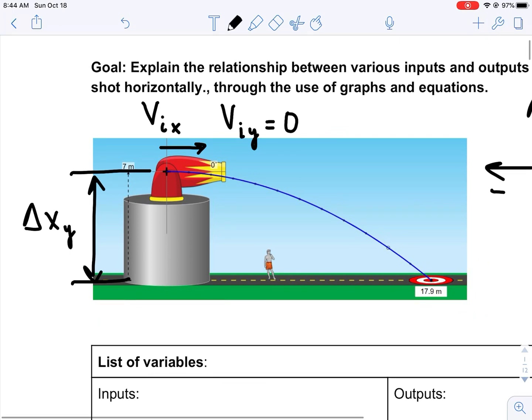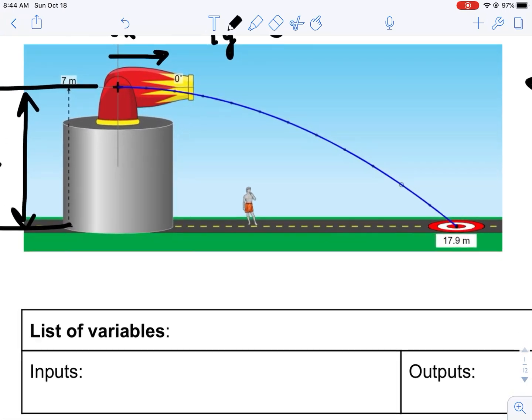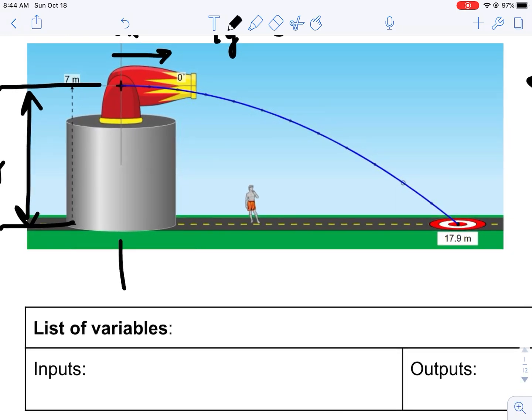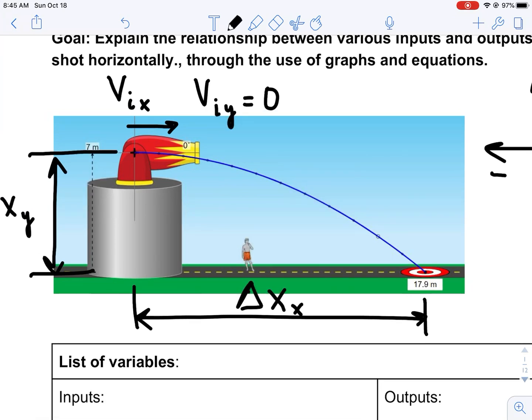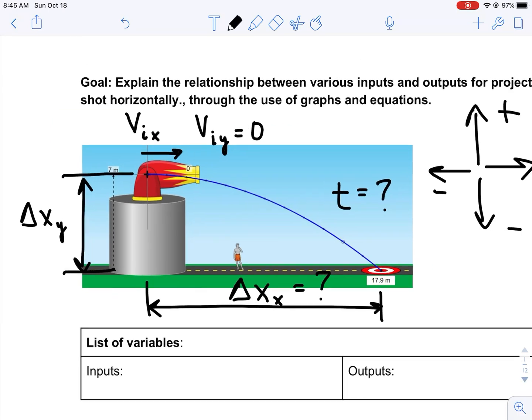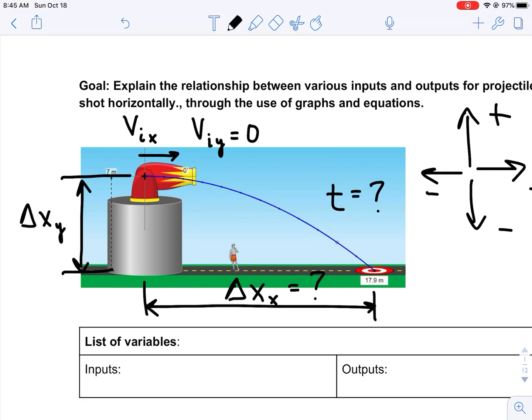As a result of changing the launch height and the launch velocity, the horizontal launch velocity, we could end up affecting how far the object travels. This is our horizontal displacement. That's one of our outputs. The other thing that could be affected is how long it's in the air. We can modify the height and the initial horizontal launch velocity, and as a result, we could end up affecting the time or the horizontal displacement.